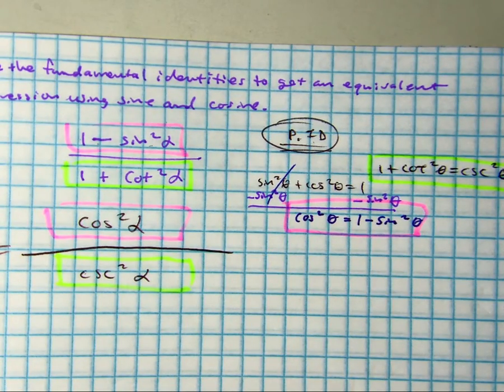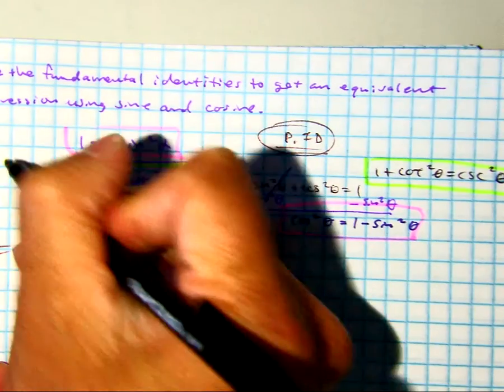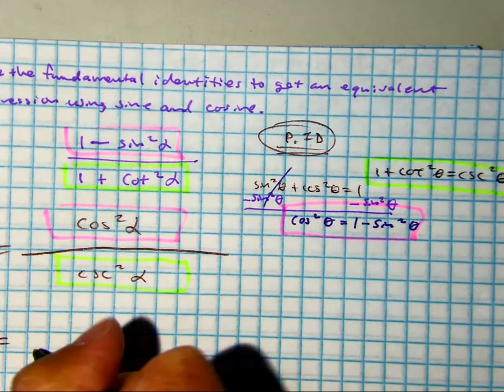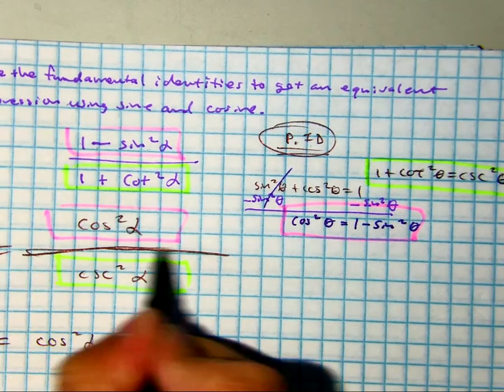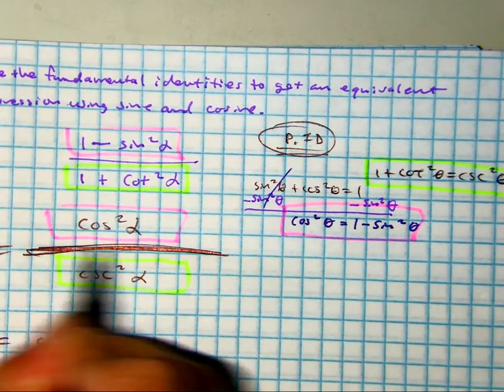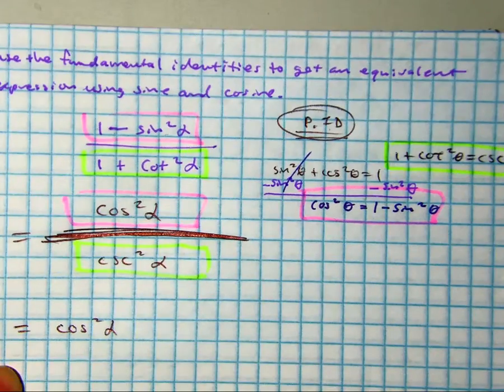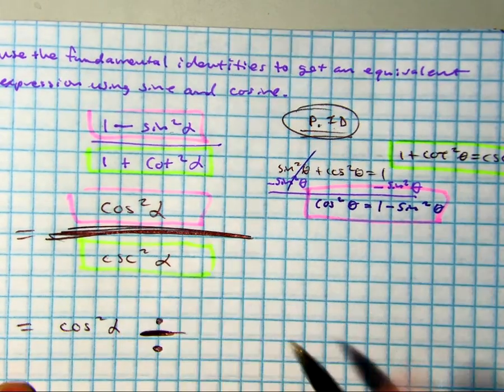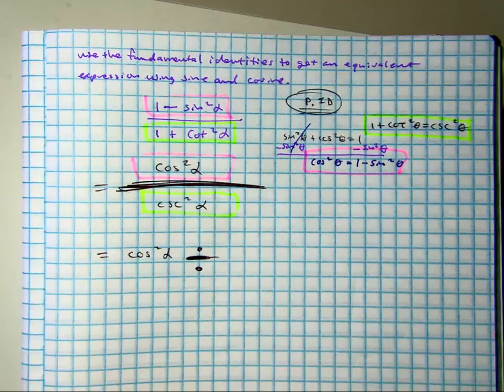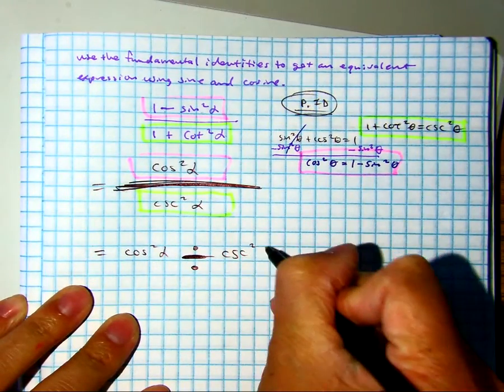Okay, let's separate our fraction now. Cosine squared alpha. Class, what math symbol is this one? Division. So, let's change that to a big division sign. Divided by cosecant squared alpha.